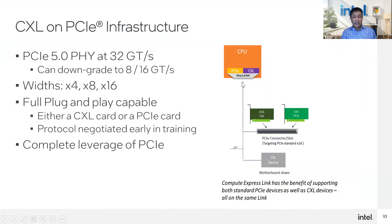CXL runs on the PCI Express infrastructure, starting with 32 gig as the baseline for high-performance devices, with the ability to downshift speed to 8 and 16 gigs. For width, we choose x4, x8, and x16. It's full plug-and-play. A CPU has both PCI and CXL tags inside it and they both share the PCIe 5 lanes. If you plug in a x16 PCI device, it will run as PCI Express; if you plug in a x16 CXL device, it will run as a CXL link. This protocol gets negotiated early in the training using PCI Express's alternate protocol negotiation mechanism, so it's completely plug-and-play and fully leverages the PCI Express infrastructure.